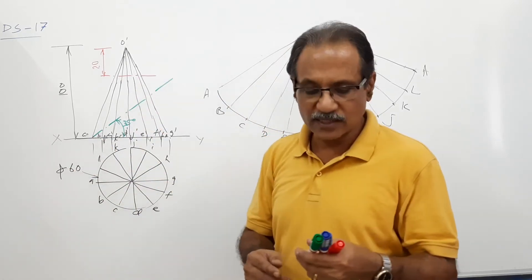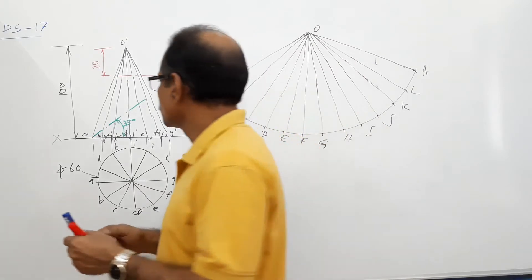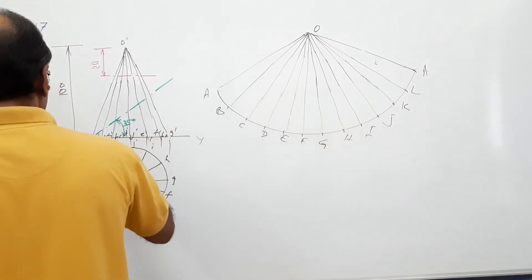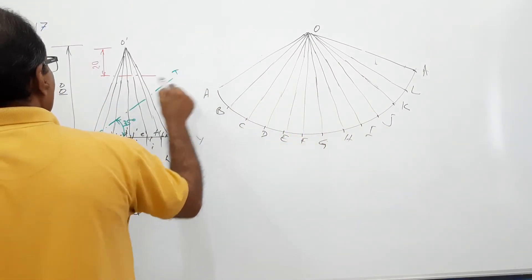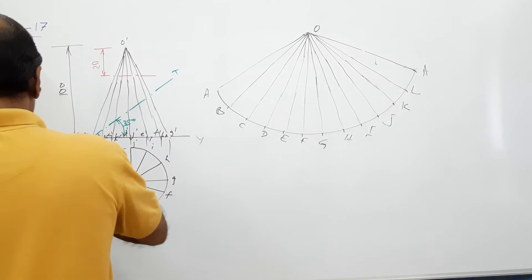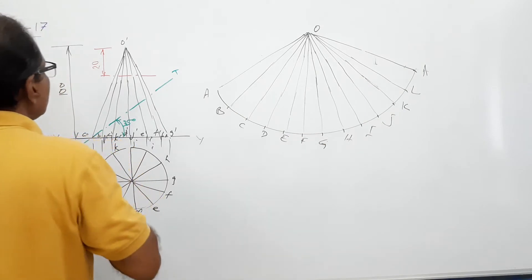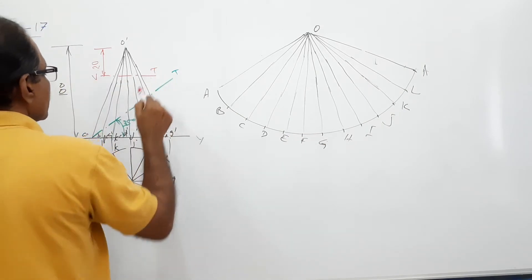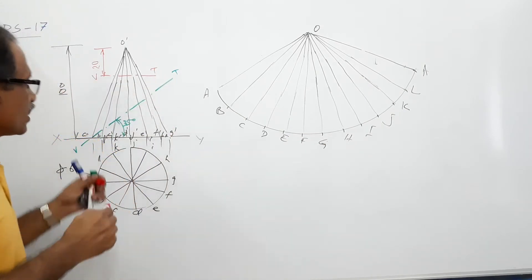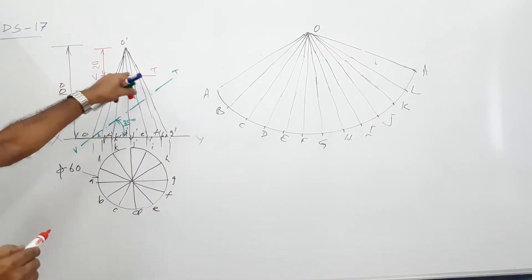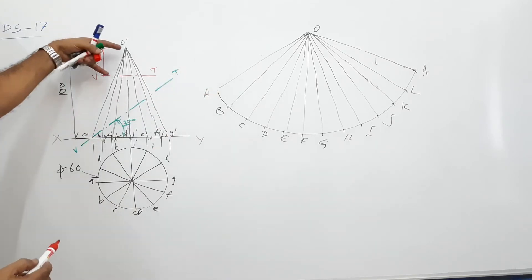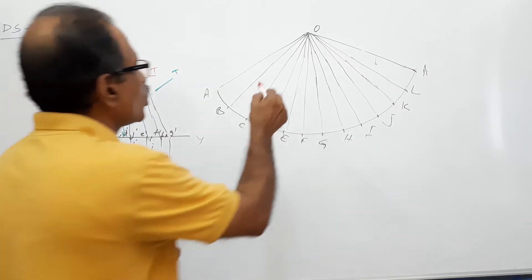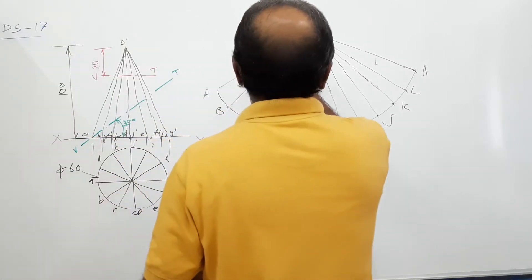So I have drawn the two cutting planes — VT. What difference does this bring in the development? Take this distance from the true length and draw an arc with your compass.